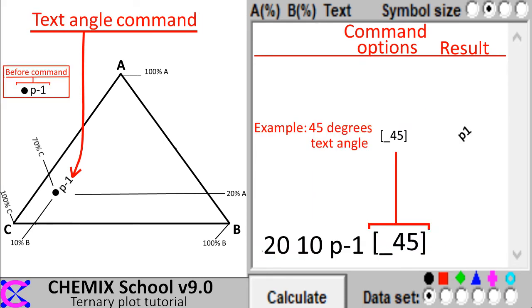By using a text angle command, it is possible to change the text angle from 0 to 360 degrees. In this example the text was angled at 45 degrees.